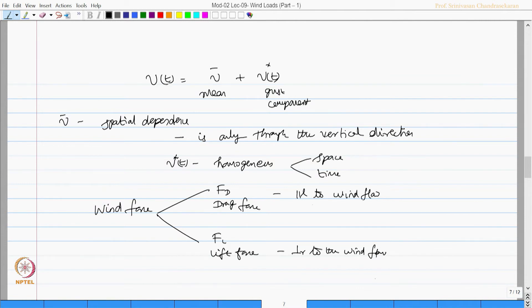F_d equals half rho C_d v(z) square A, and F_l equals half rho C_l v(z) square A, where C_d and C_l are drag and lift coefficients respectively, and A is the area perpendicular to the wind flow direction.